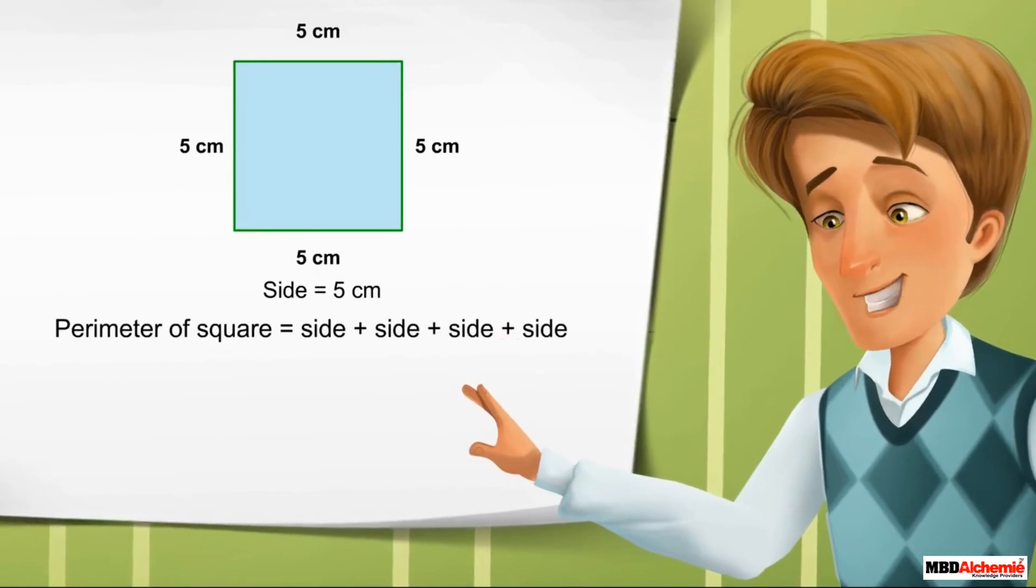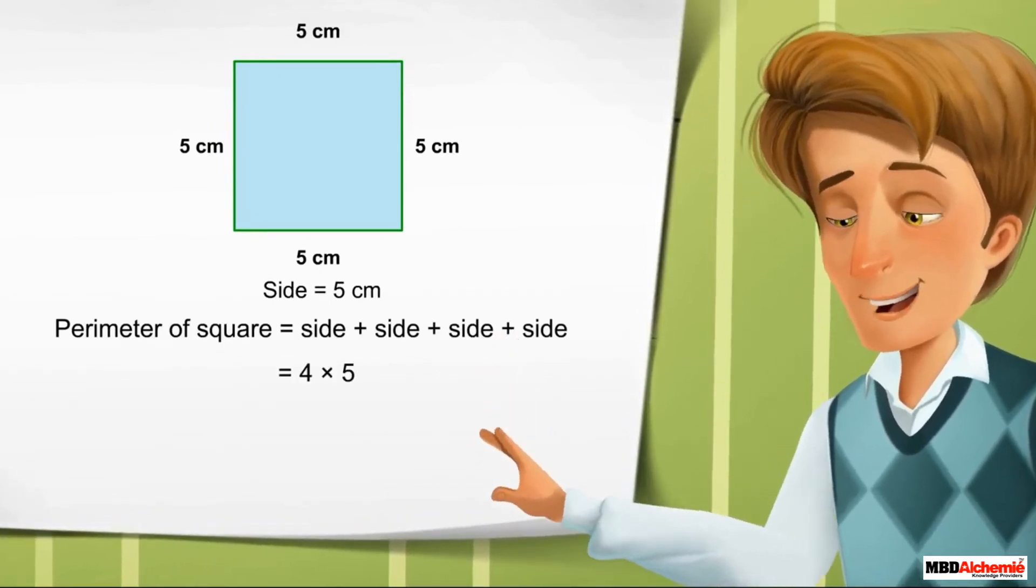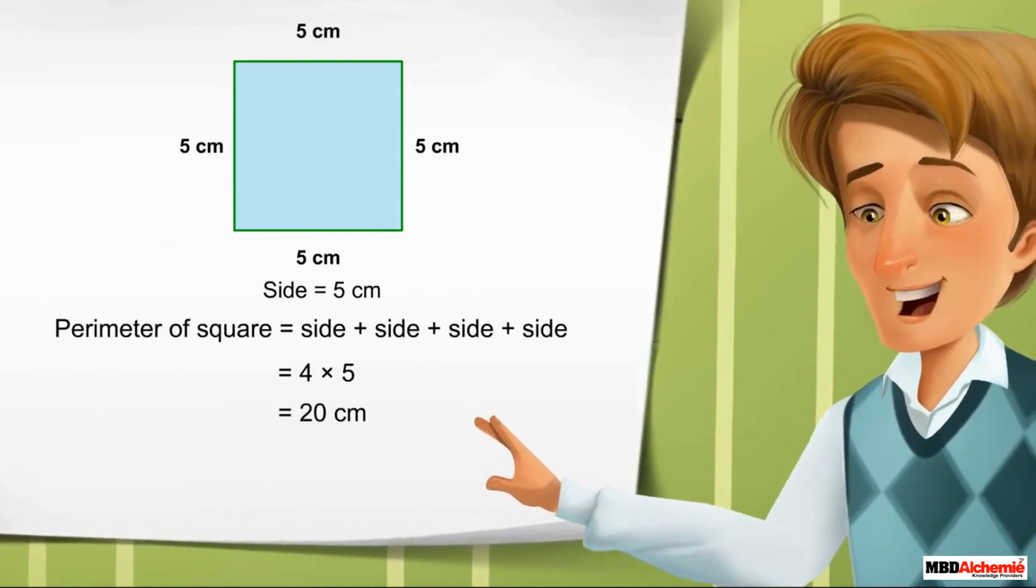So, the perimeter of a square whose side is of length 5 cm is 4 times 5, which equals 20 cm.